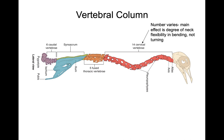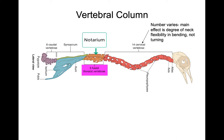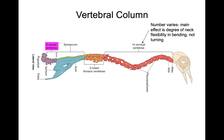Now let's move down the rest of the vertebral column. Leading from the skull, we have the cervical vertebrae, and the number of cervical vertebrae ranges in different bird groups — the greater the number, the greater the flexibility of the neck, more like bending the neck up and down rather than turning side to side. Past the cervical vertebrae, we have the fused thoracic vertebrae forming the notarium, then a fusion of the sacral vertebrae in a synsacrum, a few separate caudal vertebrae, and then the fusion of the distal ones into a pygostyle.